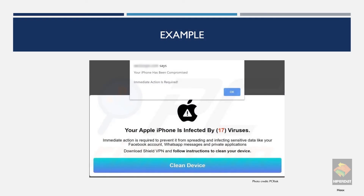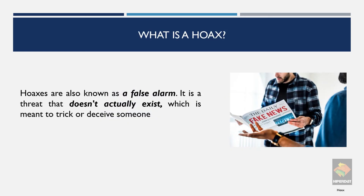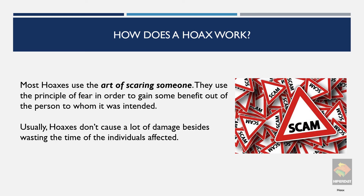Ever seen your antivirus subscription alerting you that you have several viruses right before your antivirus subscription is ending, or asking you to upgrade or renew? Well, that's the most common example of a hoax. A hoax is a fake threat or a threat that doesn't actually exist — it's used to scare or trick someone. Hoaxes work by intimidating or scaring someone in order to gain information or money from them. They waste a lot of your time by diverting your attention, but usually you have nothing to worry about — it's all just a big scam.